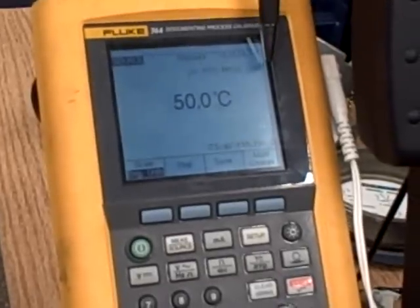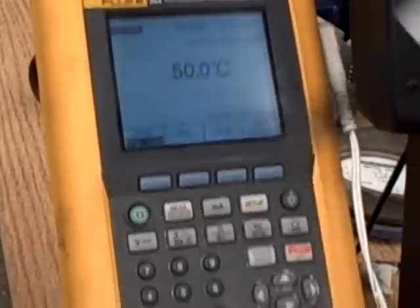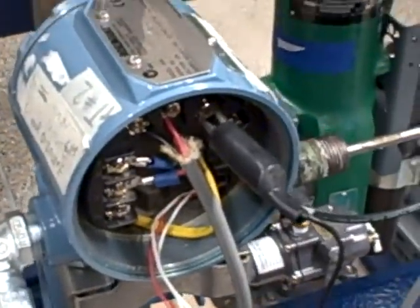Notice it says here, two-wire RTD Platinum 385. We can disregard the two-wire part. Even though our transmitter down here is configured for three-wire,